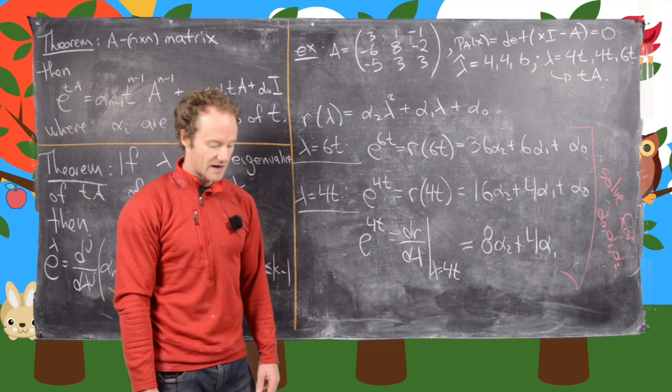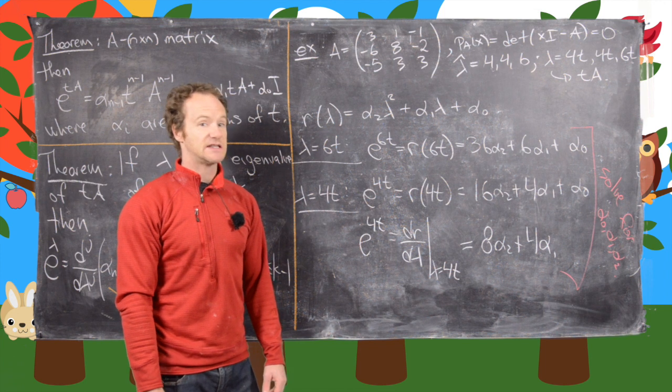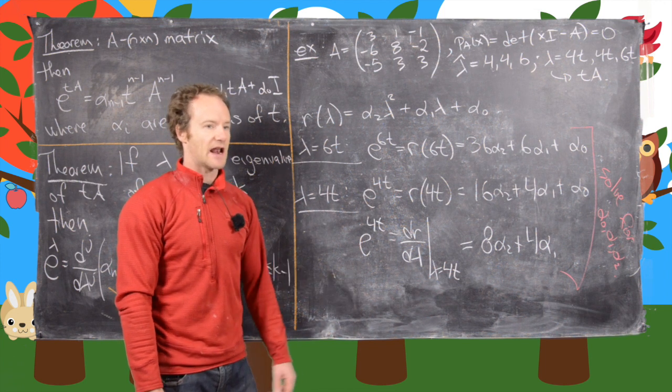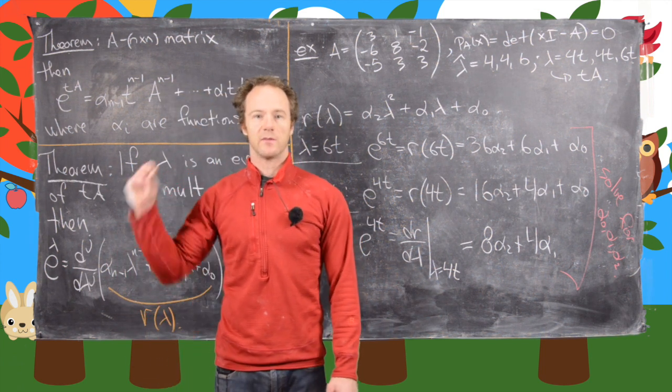this big matrix that we had at the end, which represented e to the tA in terms of that alpha_1, alpha_2, and alpha_0. So what I'll do is I'll just skip to that being on the board.